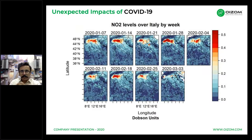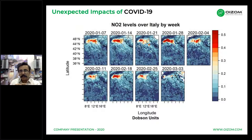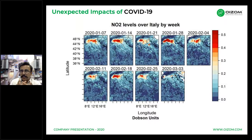As a blessing in disguise, the COVID-19 containment strategies involving travel bans and restrictions on mass gatherings resulted in a reduction of air pollution, eventually reducing deaths from pollution. For example, scientists found that China alone saved more than 77,000 lives as a result of this phenomenon.